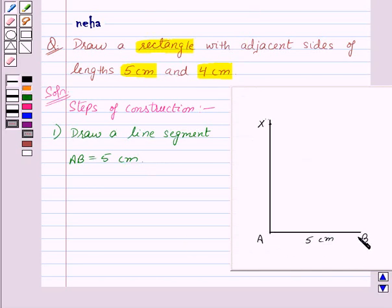So here we have drawn angle BAX equal to 90 degrees. So let us write our second step of construction that is make angle BAX equal to 90 degrees at point A.